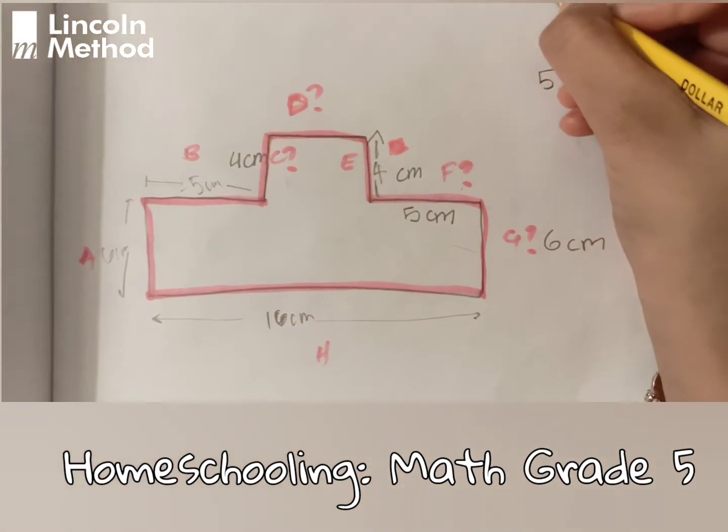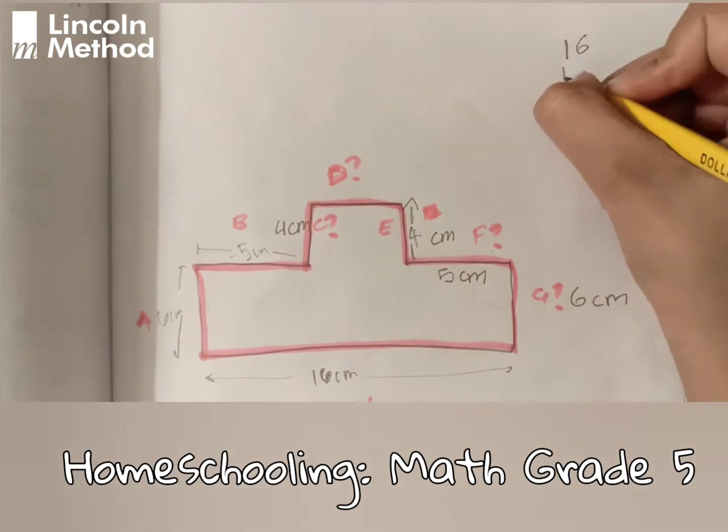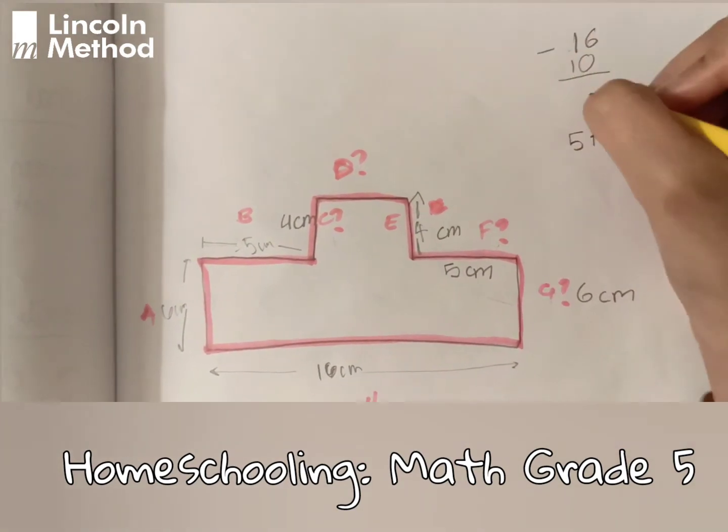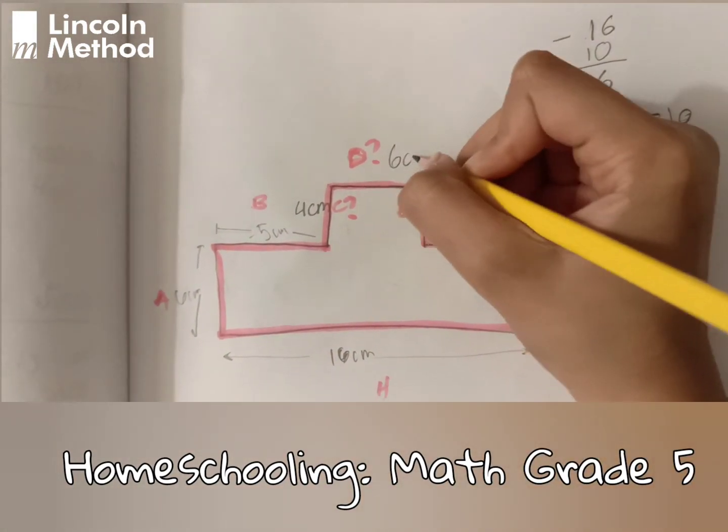Now we're going to subtract 10 from 16. 16 minus 10 is 6. So D is going to be 6 cm.